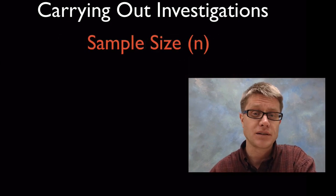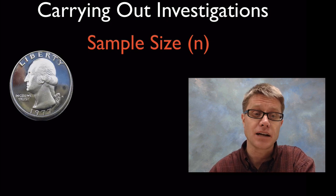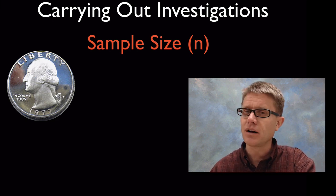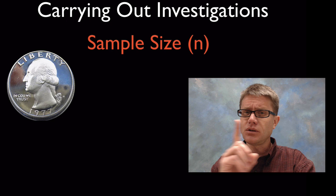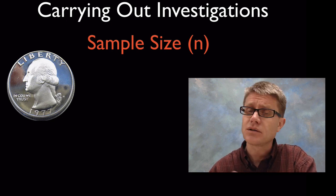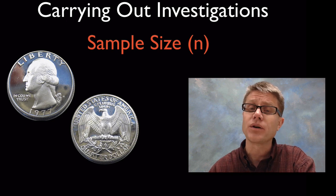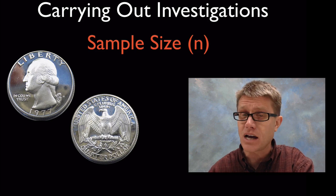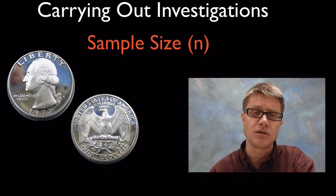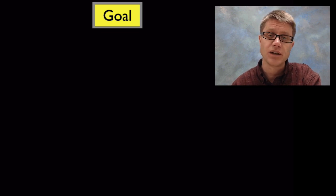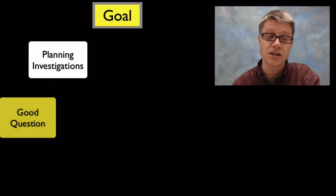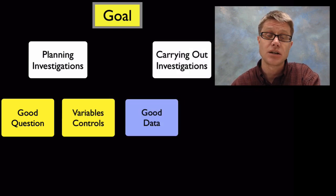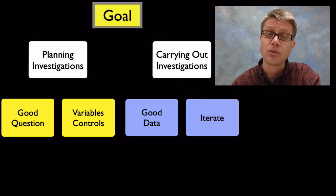Sample size is very important. Sample size is how much data you actually collected. If you flip a coin and get heads once, you wouldn't say you always get heads — you know you need more trials. So flip the coin over and over again. Similarly, don't just do the pendulum experiment once — do it multiple times. Get lots of data, increase your sample size, and you're going to get better data. The goal is to plan investigations starting with a good question, control your variables, carry out the investigation, and iterate — do it over and over again.